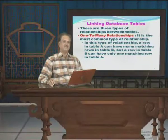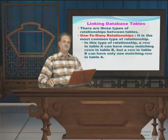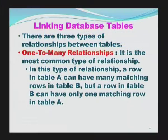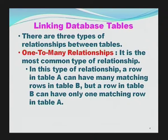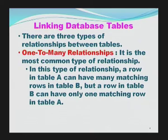There are various types of linking two or more tables. Mainly, we will highlight three different types. The first is the one-to-many relationship — the most common type. In this relationship, a row in table A can have many matching rows in table B, but a row in table B can have only one matching row in table A. This is called a one-to-many relationship.